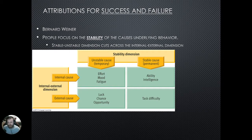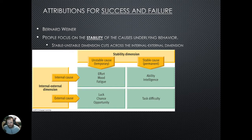Other social psychologists have tried to cut across the internal-external dimension. One of the more famous ones is Bernard Weiner. Weiner makes attributions for success and failure, saying that people should focus on the stability of the causes of the underlying behavior, rather than just the internal or external dimension.